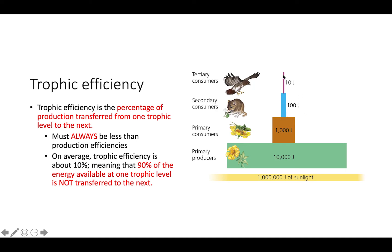And then lastly, another 10% of that to our tertiary consumers, which is just 10 joules. So we can see that as we go up each level, we're losing about 90% of the energy from the previous level.